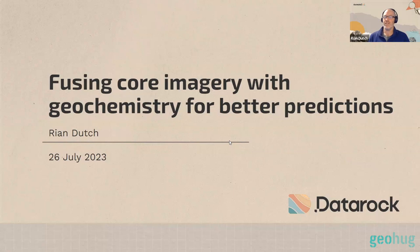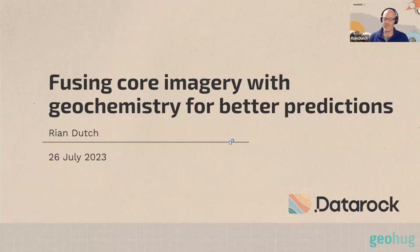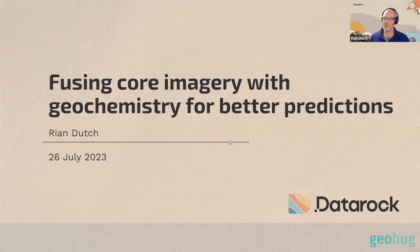What I'm going to talk about today is something we do quite a bit at Data Rock: core analytics as a platform — looking at computer vision and imagery, and then how we can take the information from neural networks and integrate that with all the other types of data sets we get downhole.